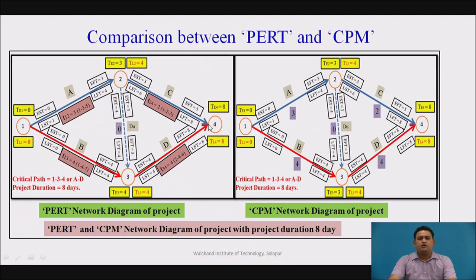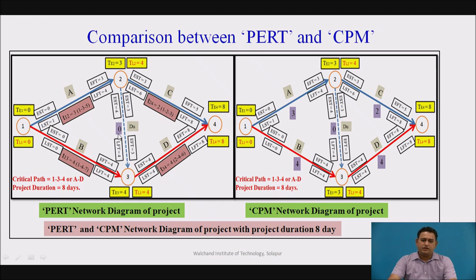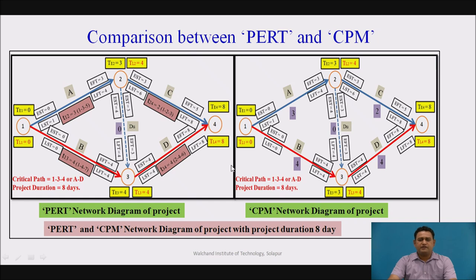This is a comparison between PERT and CPM. PERT is an event-oriented network diagram whereas CPM is an activity-oriented network diagram. Slack is present in PERT and float is present in CPM. PERT is a probabilistic type of technique and CPM is a deterministic type. In PERT, the critical path is defined with the help of events, while in CPM it is defined with the help of activities.